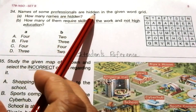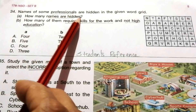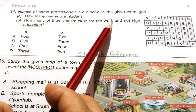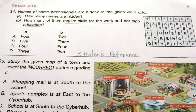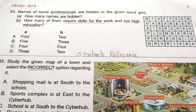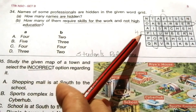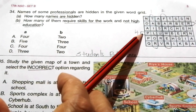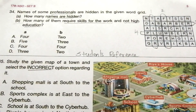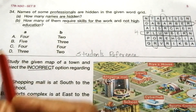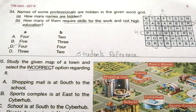Question 34: Names of some professionals are hidden in the given word grid. How many names are hidden, and how many of them require skills for the work and not high education? The hidden professionals are Tailor, Farmer, Barber, and Plumber. All four professionals need only skills and do not need high education. So the answer for both A and B is 4. The answer is C. This is a repeatedly asked question.